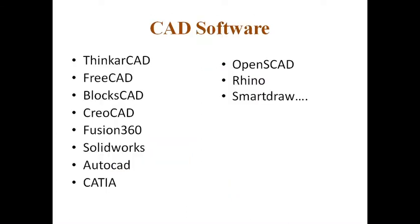Various computer-aided drawing softwares are available in the market from different software companies. I have listed a few popular softwares used for drafting 2D and 3D structures. These are Tinkercad, FreeCAD, BricsCAD, Fusion 360, SolidWorks, AutoCAD, CATIA, OpenSCAD, Rhino, and SmartDraw. If you learn any one of these softwares, you will be able to work with another software with a little bit of practice. Therefore, to study our practicals, we are going to use AutoCAD, which is a product of Autodesk.